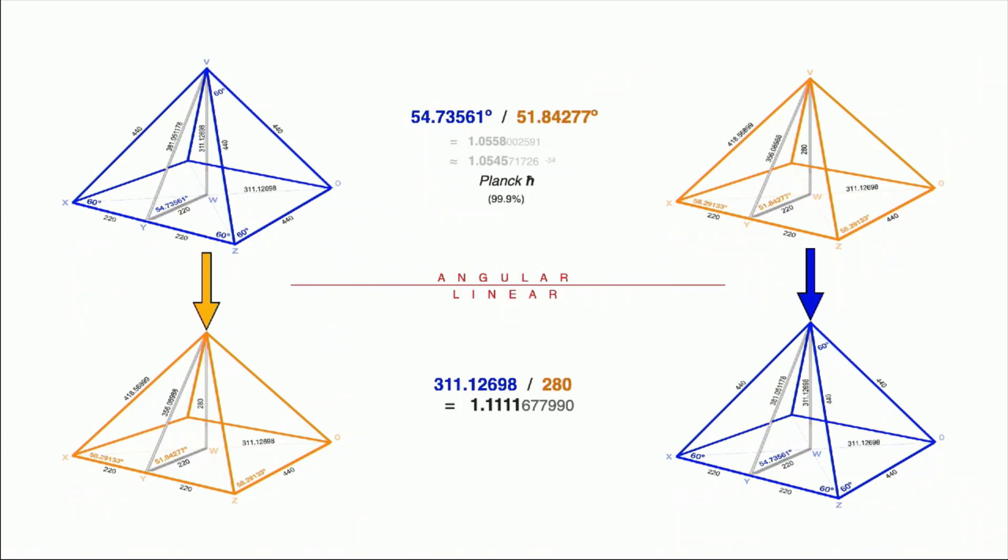That looks suspicious to me because I thought, if there's perfection inherent in this, which there must be—we go by the assumption that the universe is perfect and based on perfect geometry—you'd think that number would be 1.111111... and maybe it is.